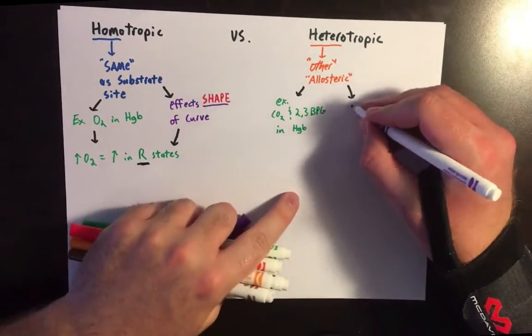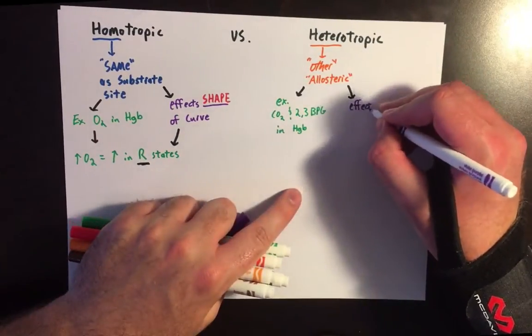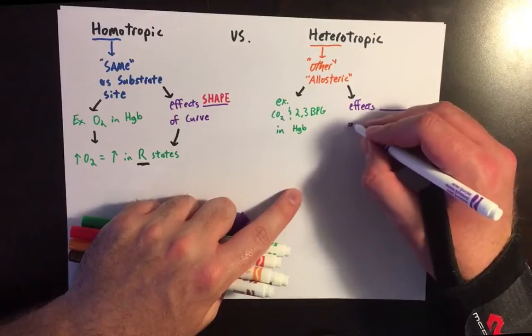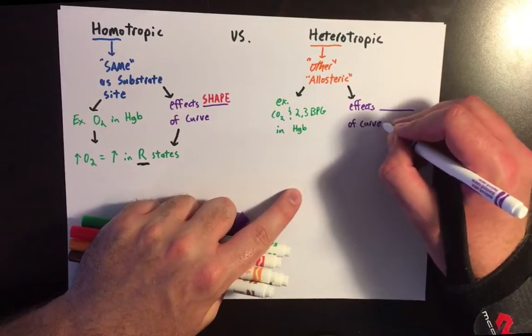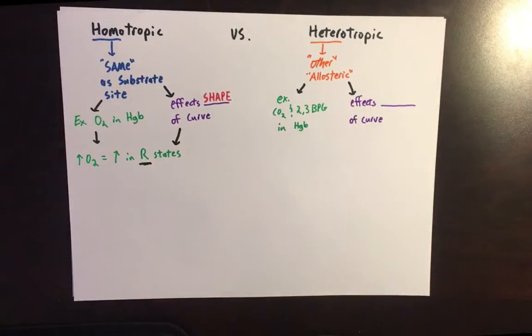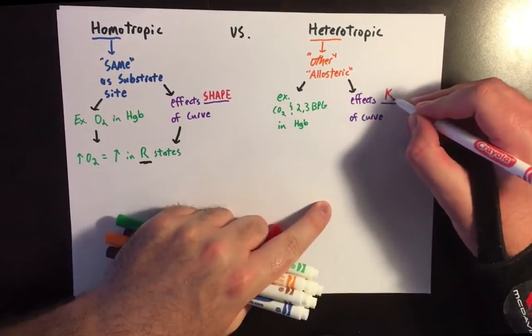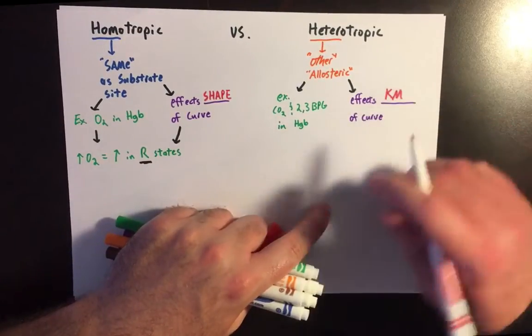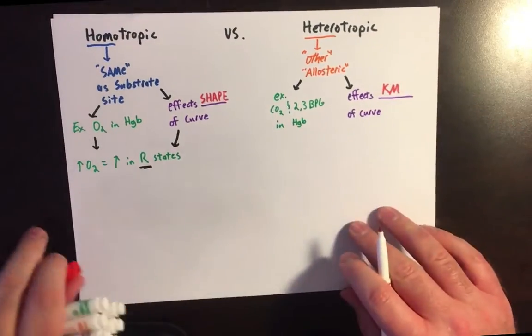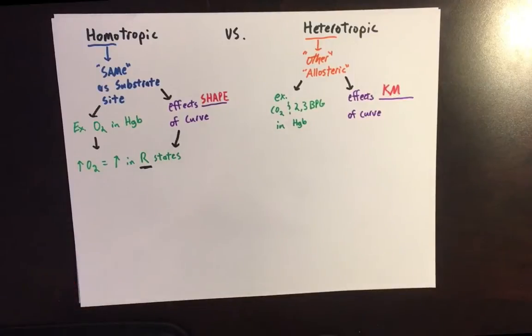Heterotrophic effectors don't compete with the substrate at the active site. What they do is affect changes in the Km value — shifting it either to the right or to the left.